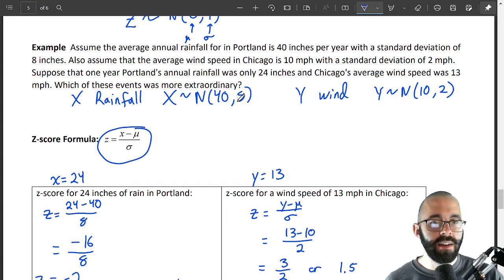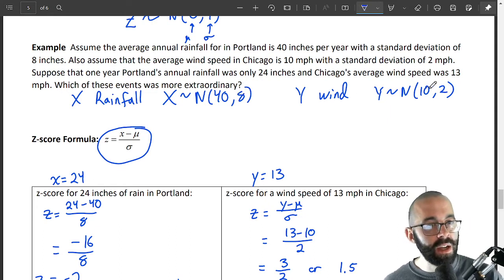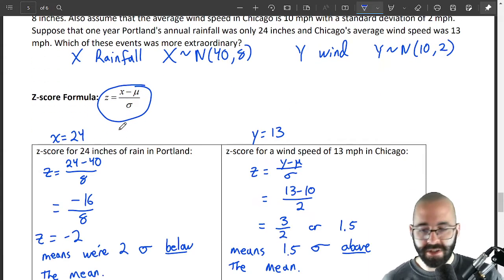A standard deviation is 4 times as big in this case than in here. So how far are we from 40? We're 16 away, that's 2 standard deviations. How far are we from 10? We're 3 units away, that's 1.5 standard deviations. That's what normalizing does. Just how many standard deviations are you from the mean?